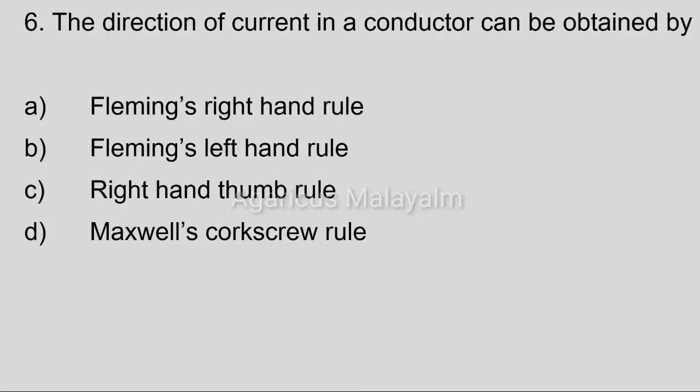Sixth question: The direction of current in a conductor can be obtained by? Option A: Fleming's right-hand rule. Option B: Fleming's left-hand rule. Option C: right-hand thumb rule. Option D: Maxwell's corkscrew rule. Correct answer: Option A, Fleming's right-hand rule.